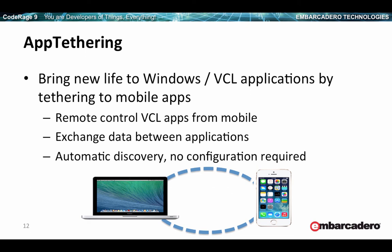One way to think about app tethering is you can remote control your VCL apps from mobile. Say you had a media player written in VCL — you can write a FireMonkey app, drop this control in, and on the Windows side set up available procedures or actions that can be accessed by another application. That becomes discoverable through Bluetooth pairing or Wi-Fi. The other application can find it, connect to it, and start making calls back and forth. No real configuration is required other than having a paired device or being on the same local network.